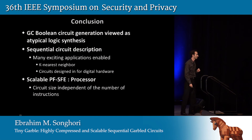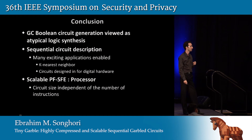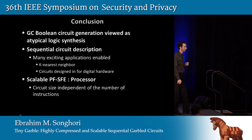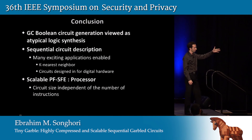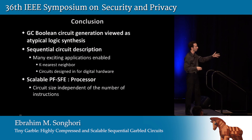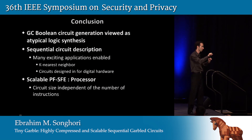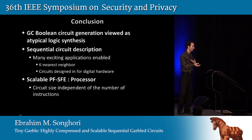A second questioner asks whether the trade-off between garbling cost and memory footprint could be fed as input to the synthesis tools. The presenter explains: they sweep the number of sequential folding from one to the maximum to find the best trade-off. The circuit size always decreases with more folding, but the number of non-XOR gates increases due to asymmetry in the loop. If the loop is symmetric, the count stays flat. This depends on the function and cannot be automated by the synthesis tools alone — it requires manual sweeping.